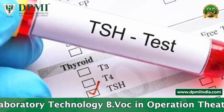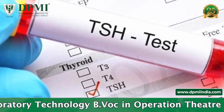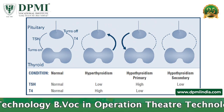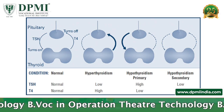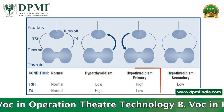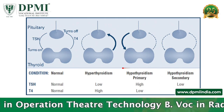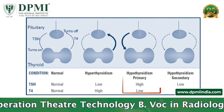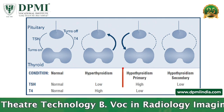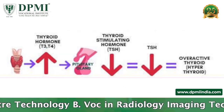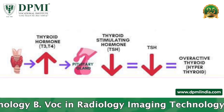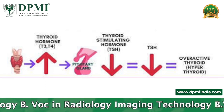Tests to evaluate thyroid function include the following. TSH test: the best way to test thyroid function is to measure the TSH level in a blood sample. A high TSH level indicates that the thyroid gland is not making enough thyroid hormone, and this condition is called primary hypothyroidism.